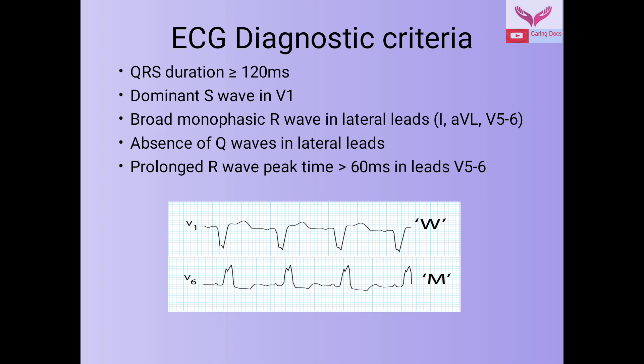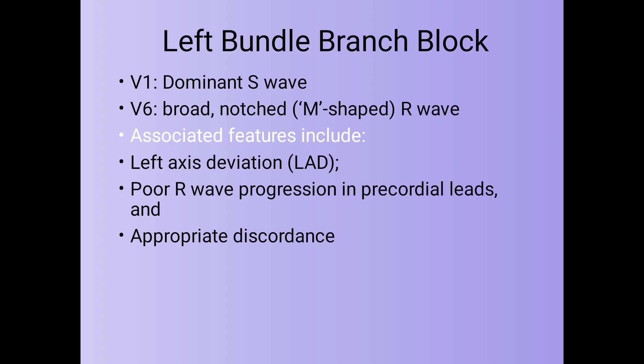The diagnostic criteria for Left Bundle Branch Block is: QRS duration more than or equal to 120 ms, dominant S wave in V1, broad monophasic R wave in lateral leads (lead 1, aVL, V5, V6), absence of Q waves in lateral leads, prolonged R wave peak time more than 60 ms in V5 and V6. In V1 we get a dominant S wave, and in V6 a broad notched M-shaped R wave. Other associated features may include left axis deviation, poor R wave progression in the precordial leads, and appropriate discordance.